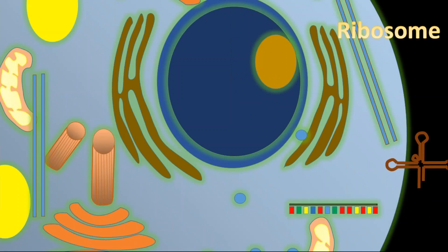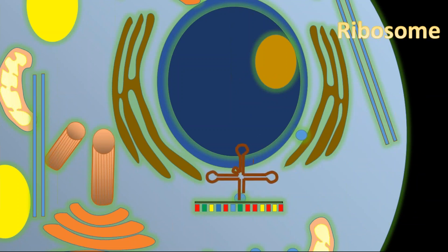Next, ribosome. Ribosome combines the mRNA and the tRNA and produces a polypeptide.